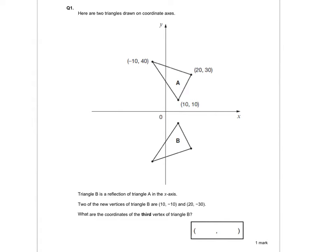In this question we've got two triangles A and B and they've been reflected in the x-axis. I'm just going to take a minute to underline some of the key information: reflection of triangle A in the x-axis. Two of the new vertices of triangle B are (10, -10), so I'm going to pop that one in — 10, -10 there — and I can see that because that's 10, 10, that's going to be 10, -10.